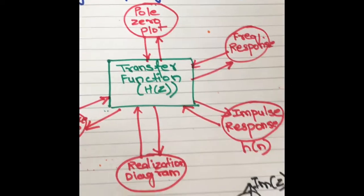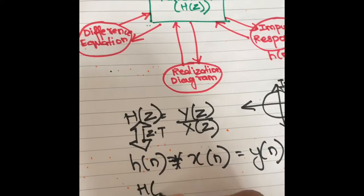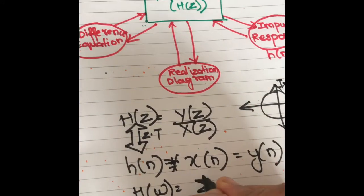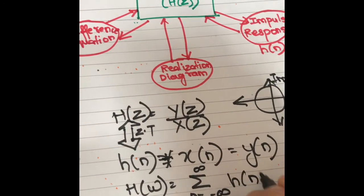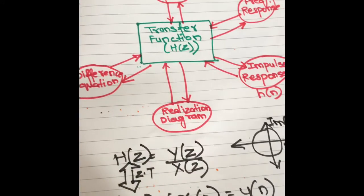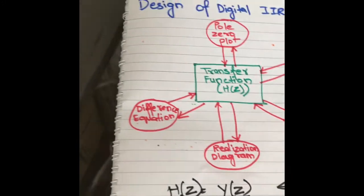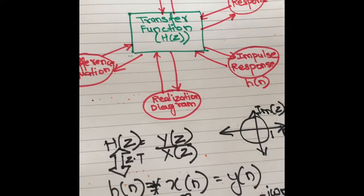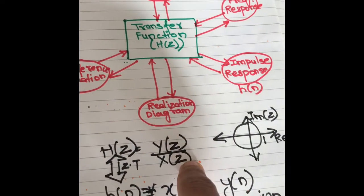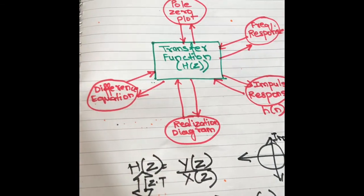The frequency response is found using DTFT. H(omega) is given by the summation from n equals minus infinity to plus infinity of h(n) times e raised to minus j omega n. So H(omega) is the frequency response. We also find the difference equation by taking the inverse Z-transform of Y(z) over X(z) and cross-multiplying.